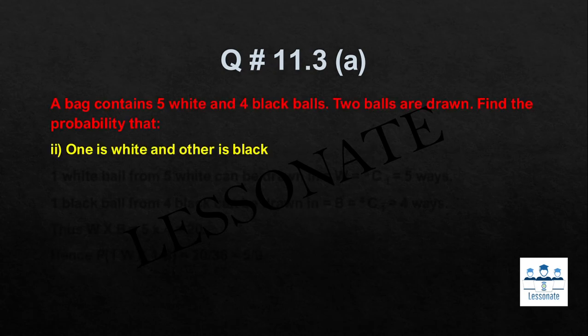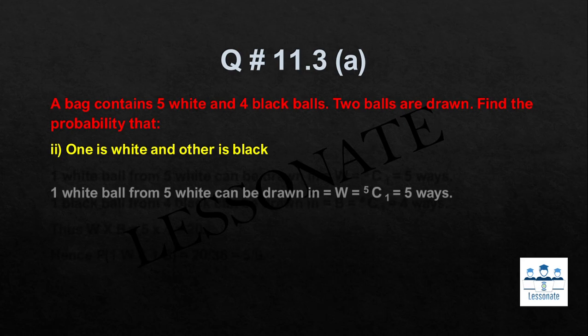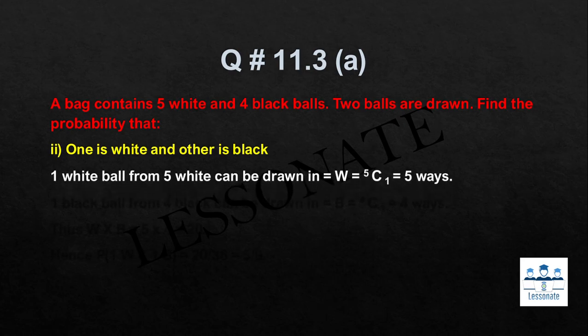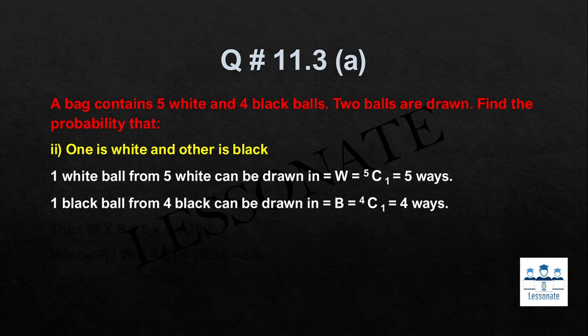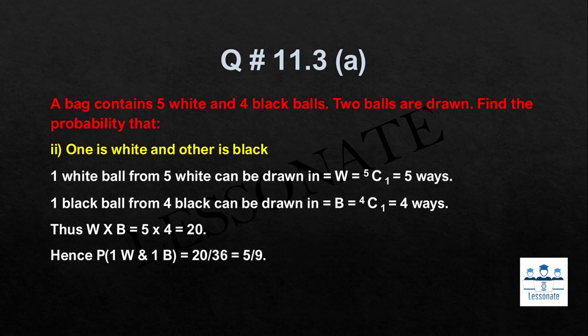Next part: one is white and the other is black. One white from 5 white can be drawn in C(5,1) = 5 ways; one black from 4 black can be drawn in C(4,1) = 4 ways. Multiplying gives 5 × 4 = 20 favorable outcomes. Hence the probability is 20/36 = 5/9.